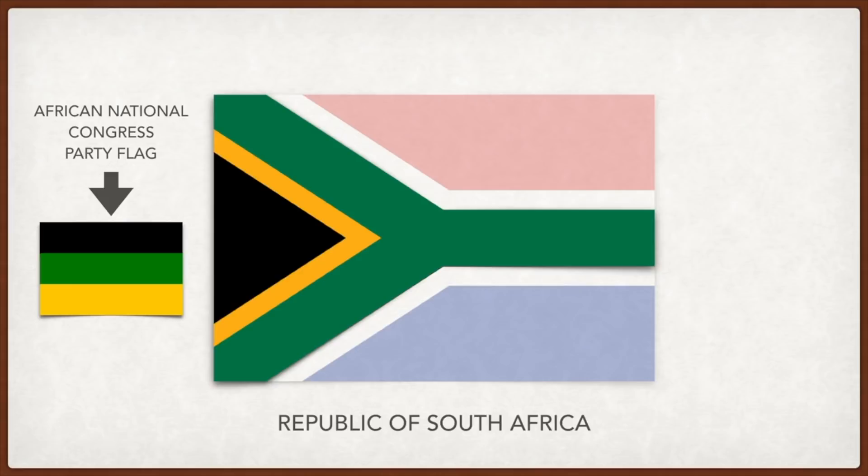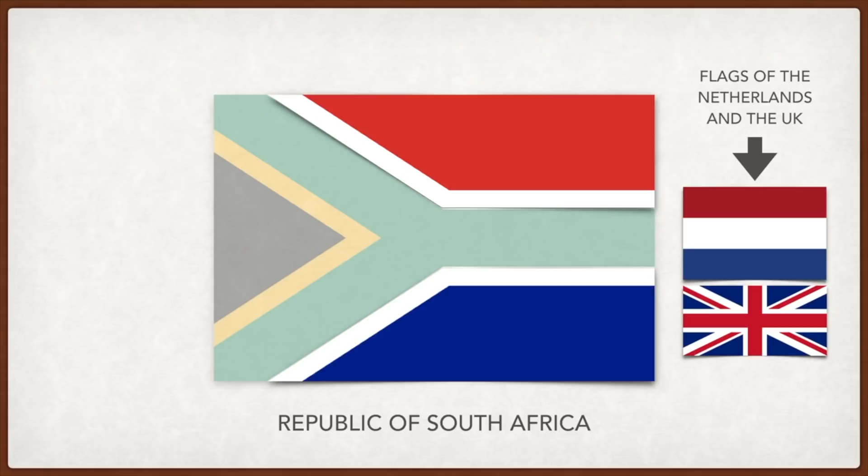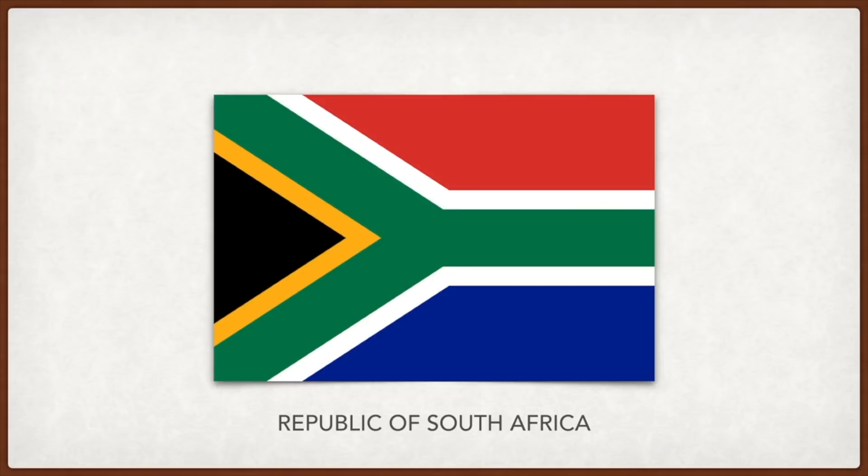South Africa: the black, green, and yellow represent the Black population because of its association with the African National Congress Party. Red, white, and blue represent the white population because of its history with the Dutch and the British. The Y-shape is a symbol of unification of the various ethnic groups. Myanmar: yellow is for solidarity, green is for peace, and red is for courage; the white star represents the union.